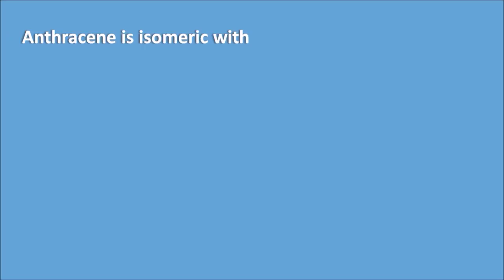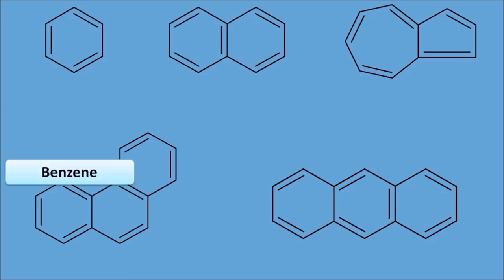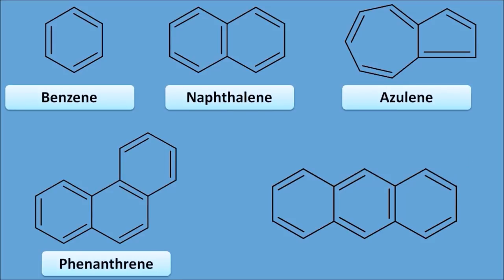Next question: anthracene is isomeric with which compound? Options: A. Phenanthrene, B. Naphthalene, C. Benzene, D. Azulene. The right answer is Phenanthrene. Looking at the structures: benzene has one aromatic ring, naphthalene has two, azulene is a different bicyclic compound, while Phenanthrene and Anthracene both have three aromatic rings — making them isomeric compounds with the same molecular formula.